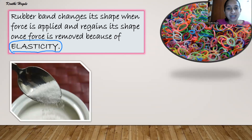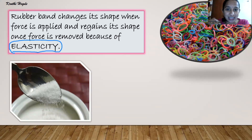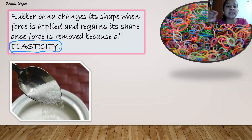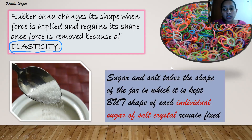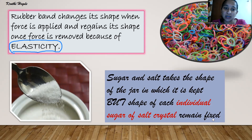What about sugar or salt? When put in jars of different shapes, they get the shape of the jar. But solids must have a fixed shape and should not take the shape of the container. However, if you take an individual sugar or salt crystal, its shape remains the same and is constant. Sugar and salt take the shape of the jar, but the shape of each individual crystal remains fixed.